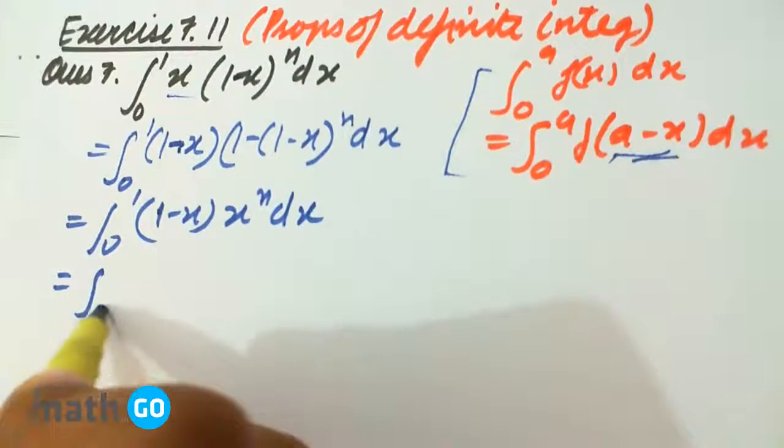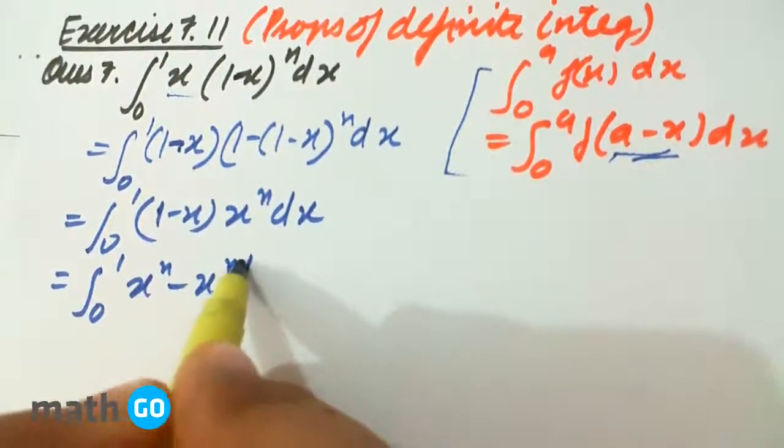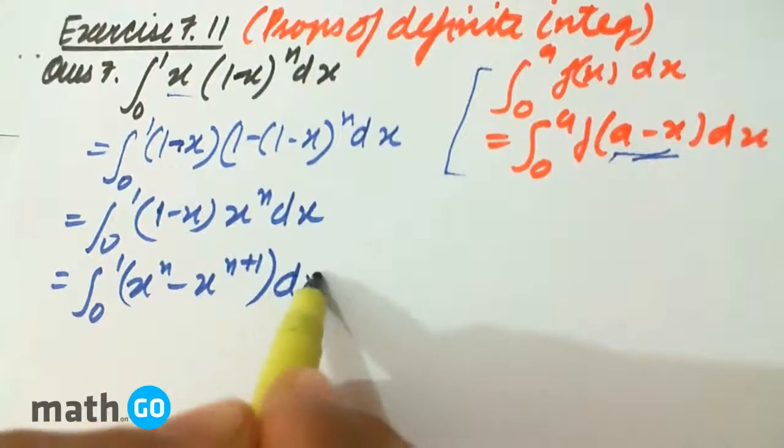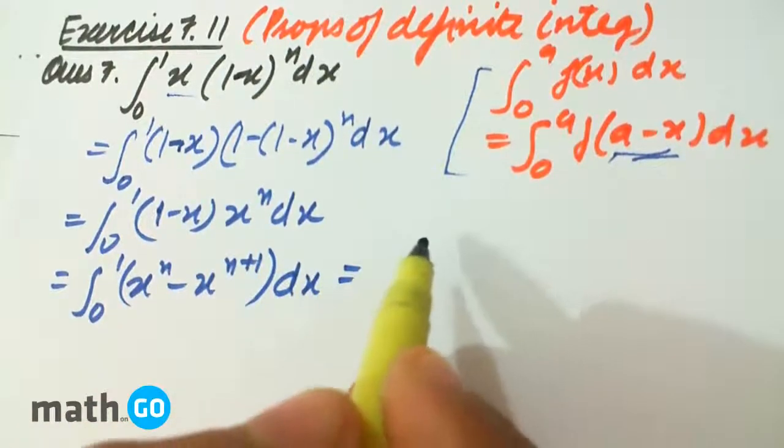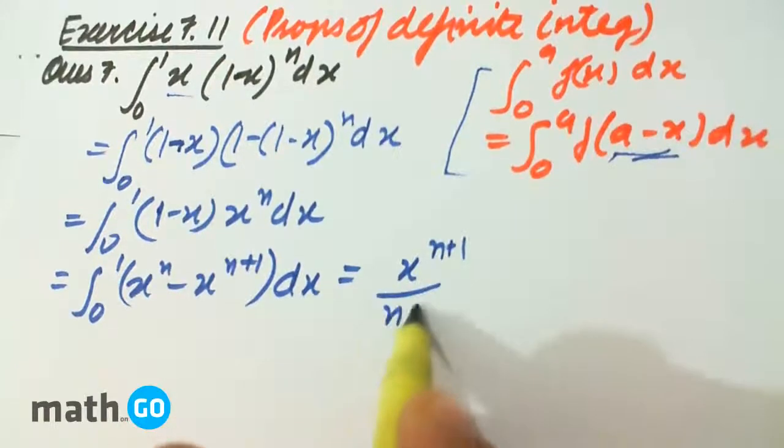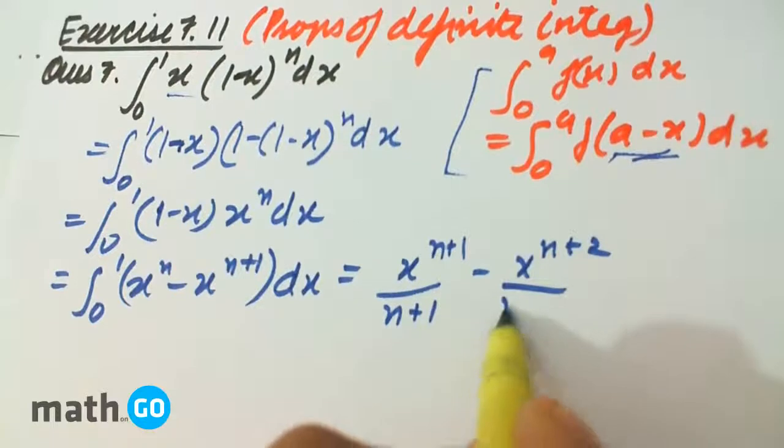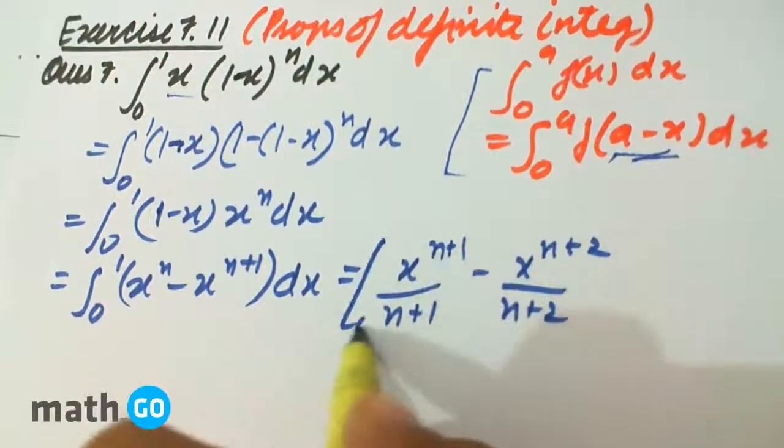Now it can be solved very easily. How? The integral of x^n minus x^(n+1) dx, which will be x^(n+1) upon n+1 minus x^(n+2) upon n+2 from 0 to 1.